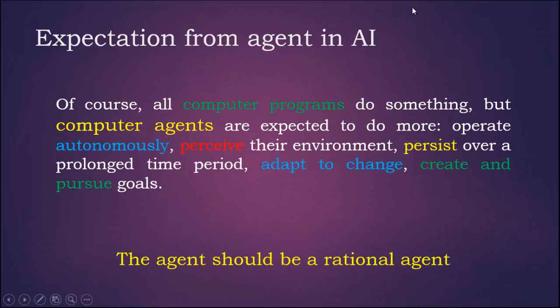What we are expecting from the agents in the discipline of AI. Of course we know about that all computer programs do something. But computer agents are expected to do more. It should operate autonomously, perceive their environment, persist over a prolonged time period, adapt to change, create and pursue the goals. And remember that moreover we are expecting that an agent should be a rational agent.